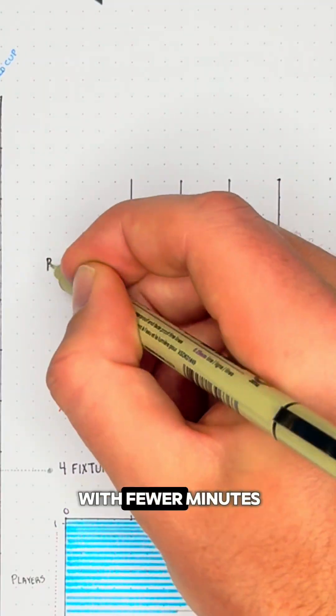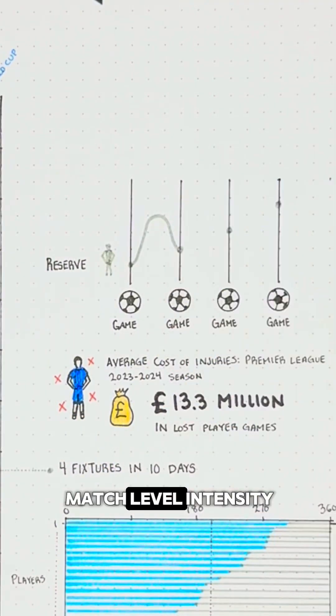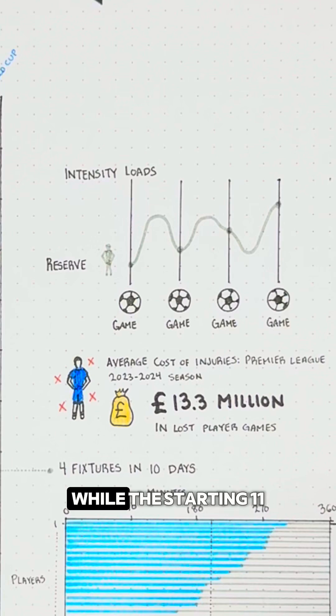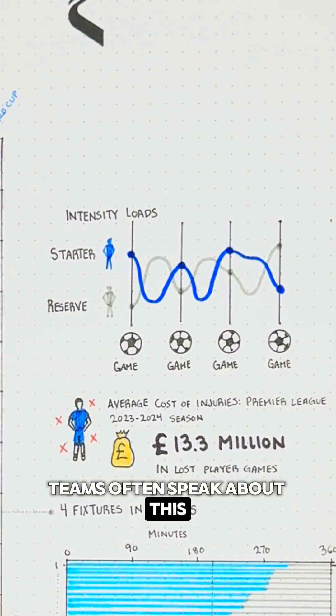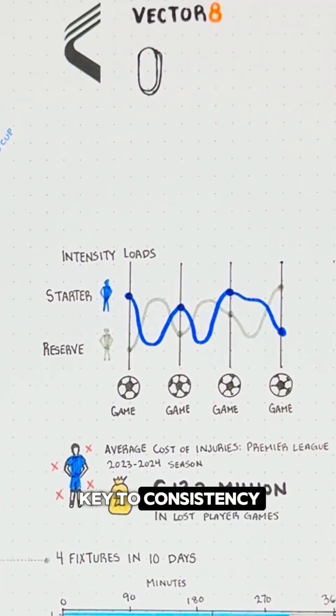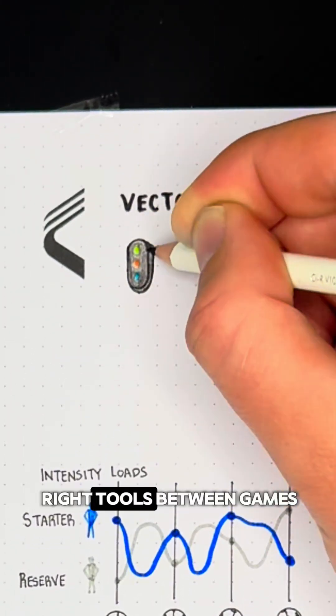It's about ensuring players with fewer minutes are still exposed to match-level intensity to stay game-ready, while the starting 11 recover properly between their matches. Teams often speak about this player availability as a key to consistency, and it requires the right tools between games.